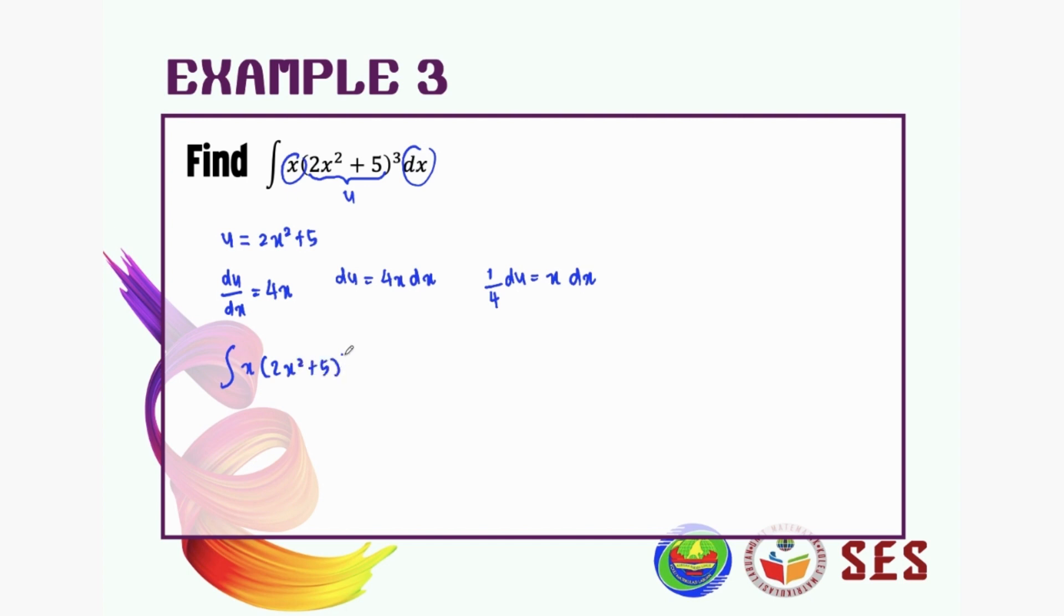So we write it back: plus 5 to the power of 3 dx. This is our u, so integration of u to the power of 3. And we know that our x dx is 1 over 4 du.